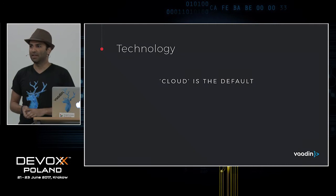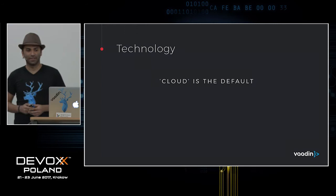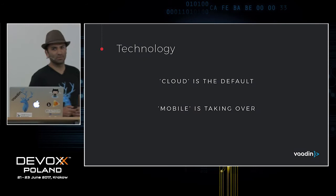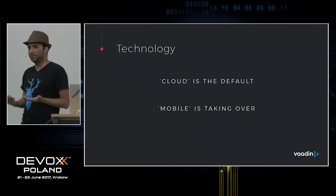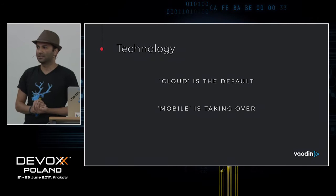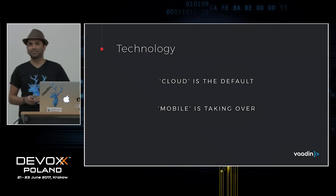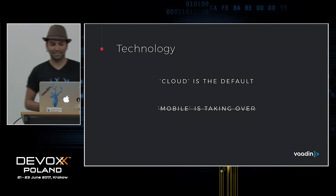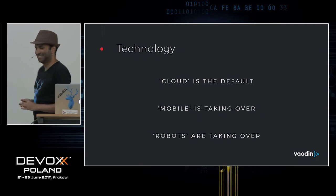Whenever we start a new application, by default, we make it on the cloud, available on all browsers, on all devices, tablets, mobiles, and everything. But nowadays, we are talking about mobile taking over. A lot of people are telling that you should develop for mobile devices, consider mobile-first design. But if you follow what big companies like Microsoft and Google are doing right now, you'll figure out that it's not really mobile that's taking over — there are robots taking over.